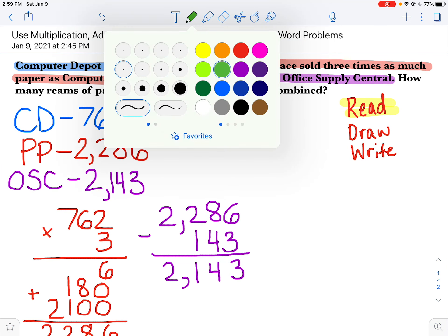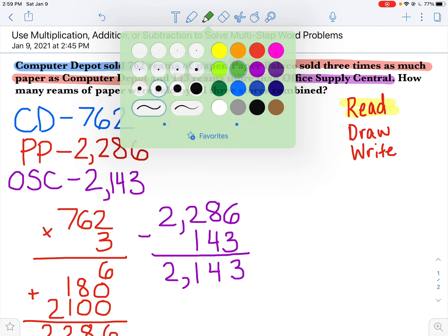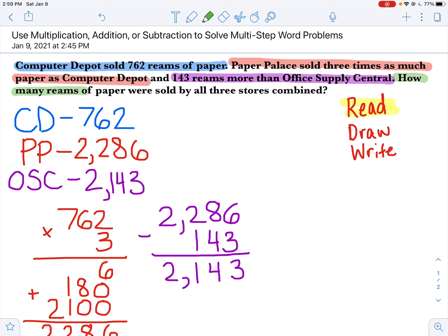I have to do my last step, which is—actually we'll put a little darker green. How many reams of paper were sold by all three stores combined. So I'm going to take all three stores, and I'm going to actually start with my larger numbers, and I'm going to start with the Office Supply Central here. 2,143 plus 2,286 plus 762. Now you can decide, do you want to split it up into two steps and add two of them and then add the third, or do you want to do it all in one lump? I like to just do it all in one lump. Now that we have the algorithm, nice and easy.